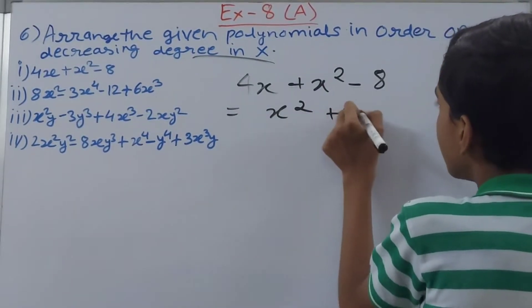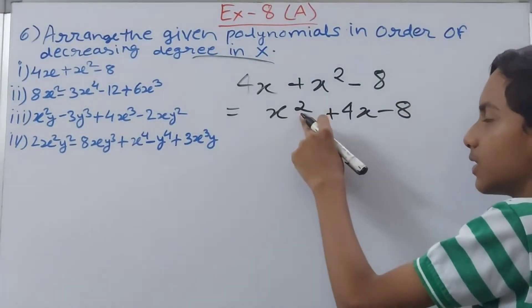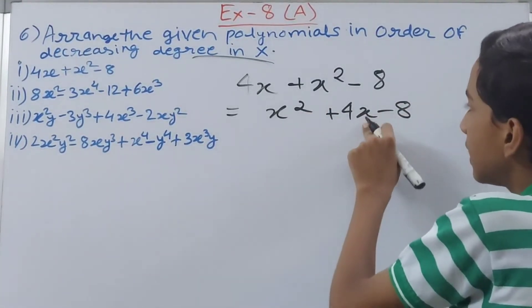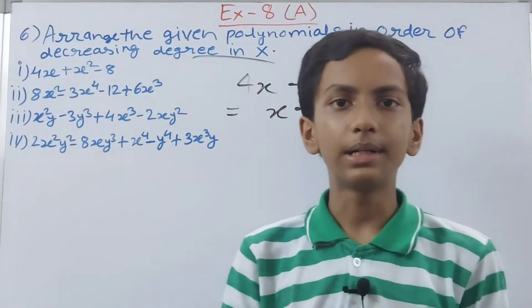So plus 4x and minus 8. So x has 2 as its degree here, x is 1, and here it is 0, no variable. Let us move on to the next part.